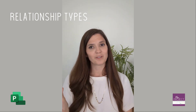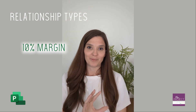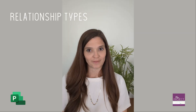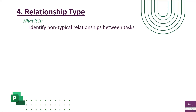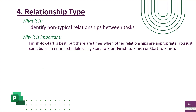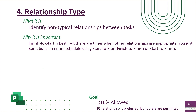You use these relationship types interchangeably. Finish-to-start is the default and preferred method; however, DCMA allows up to 10% of your tasks to have relationships other than finish-to-start. This metric identifies non-typical relationships between tasks. DCMA understands that other relationships are sometimes appropriate, but you shouldn't build an entire schedule using start-to-start, finish-to-finish, or start-to-finish — that's why this metric exists.